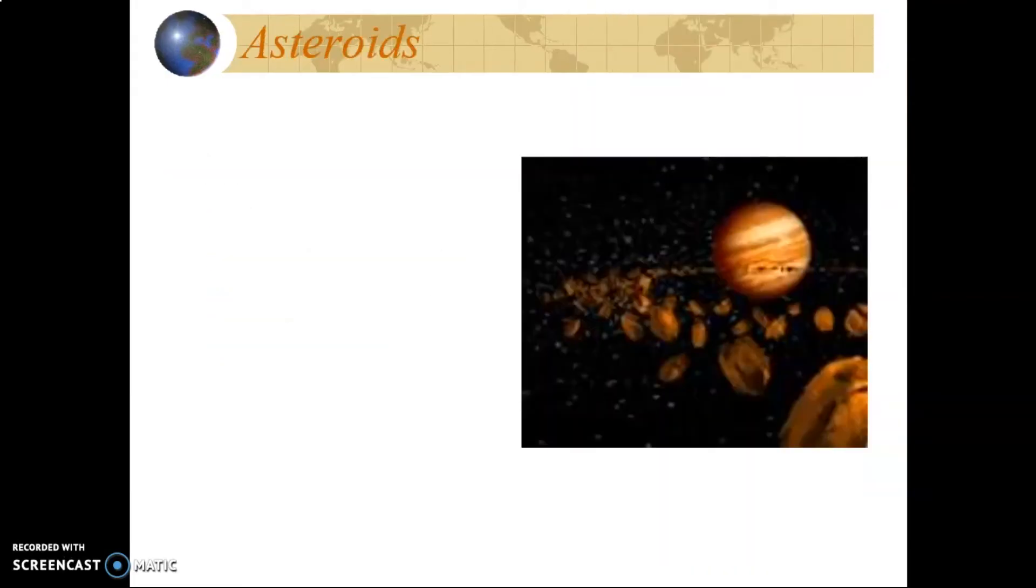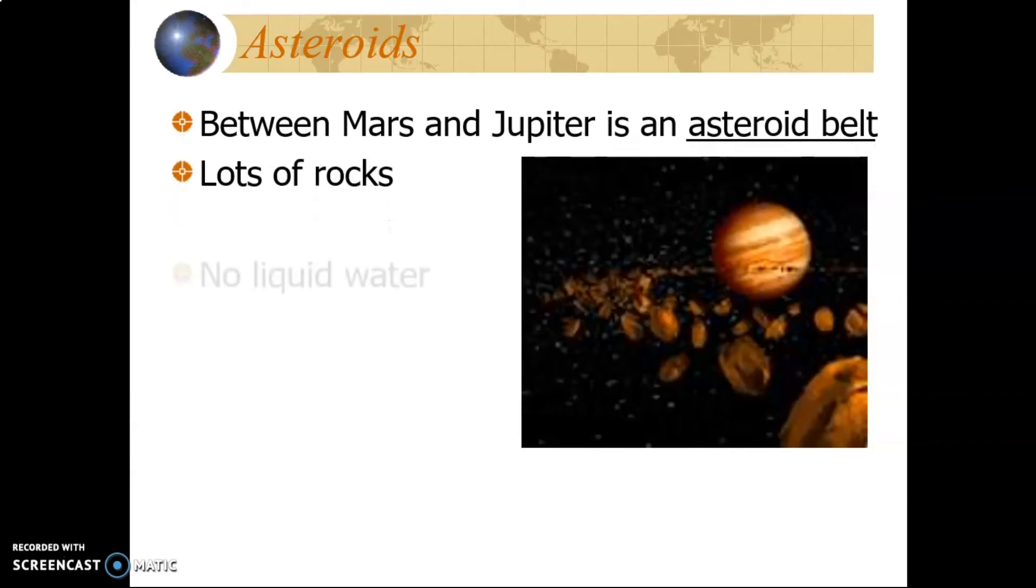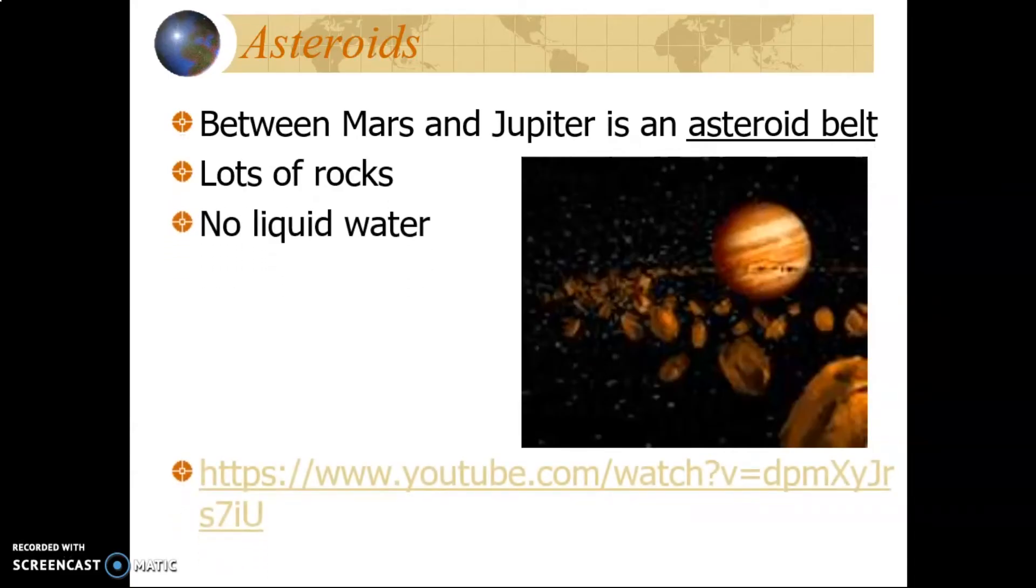Between Mars and Jupiter is an asteroid belt, which is a collection of rocks orbiting around the Sun. There is no water here, but the movement of the asteroid belt tells scientists mathematical information about how the universe was formed.